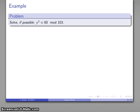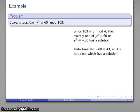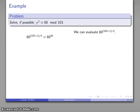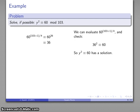One more example: y² ≡ 60 (mod 103). We check whether −60 ≡ 43 (mod 103) has an obvious solution — it doesn't, so we can't immediately tell which one has a solution. No problem — we evaluate 60^((103+1)/4) = 60^26, which works out to be 36. If this congruence has a solution, it will be ±36. We verify: 36² ≡ 60 (mod 103). So y² ≡ 60 has a solution, and it's y ≡ ±36 (mod 103).